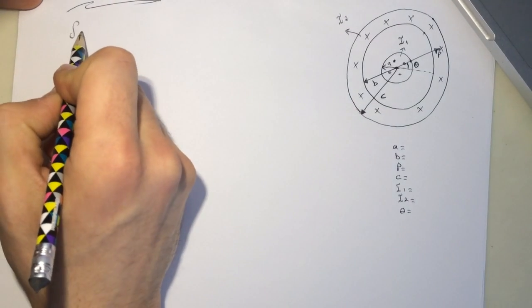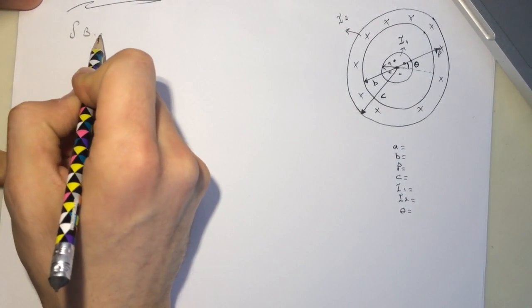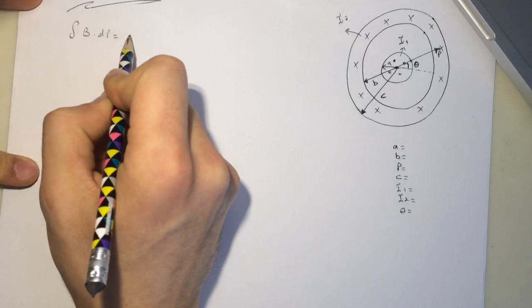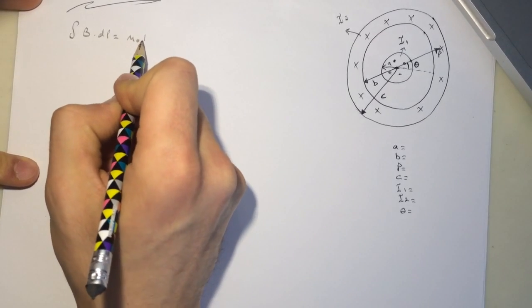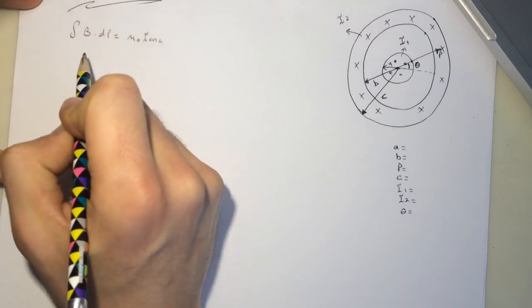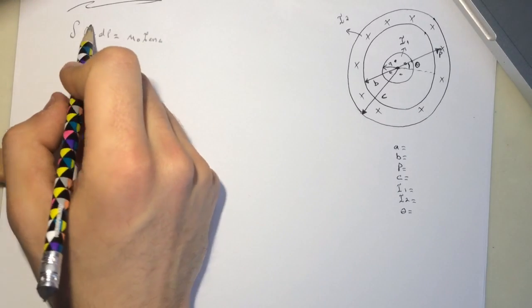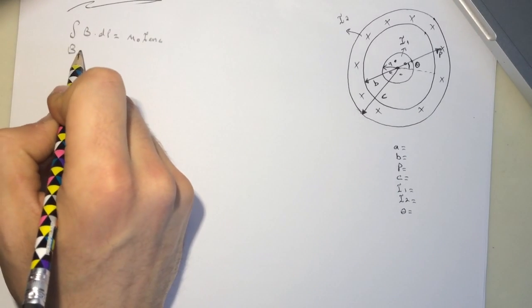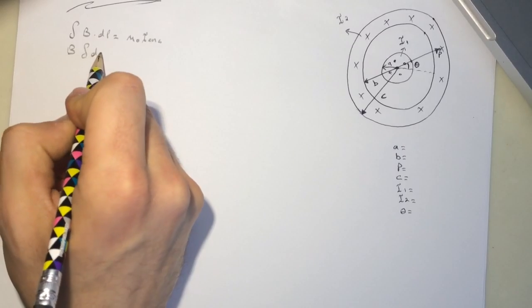We are using Ampere's law, so B dot dl equal mu knot i enclose. So B will be constant, you can pull it out, and then dl.